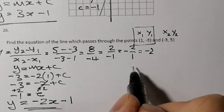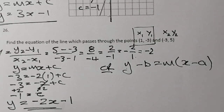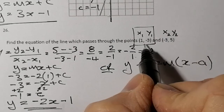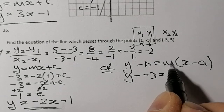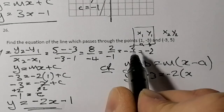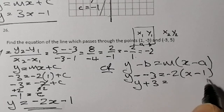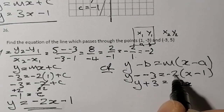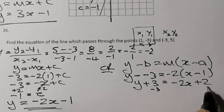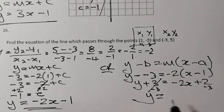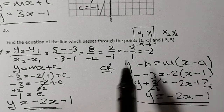The other way is to use y - b = m(x - a). Using the same point (1, -3) as a = 1, b = -3: y - (-3) = -2(x - 1), so y + 3 = -2x + 2. Taking 3 away from both sides gives y = -2x - 1. So that's two options to work out that question — both give the same equation.